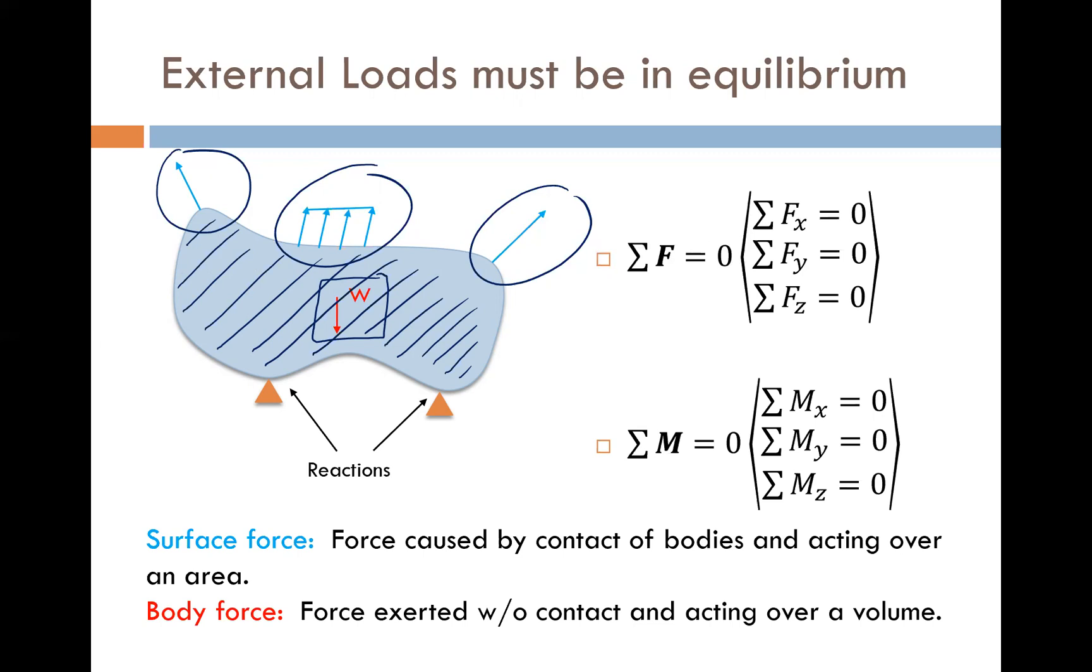When we have these surface forces and body forces applied, they must be in equilibrium, which means we must have reactionary forces to put this overall body into equilibrium. And more specifically, when we talk about equilibrium, we're talking about the sum of the forces in all directions—that would be the x, y, and z directions—and the sum of the moments about all axes. So the moments about the x, y, and the z axes all must equal zero.